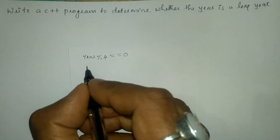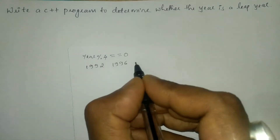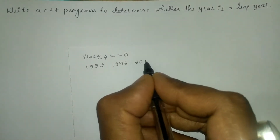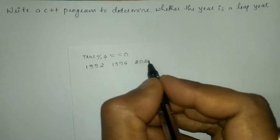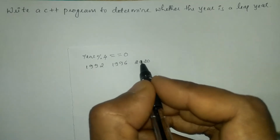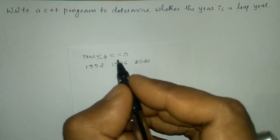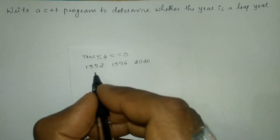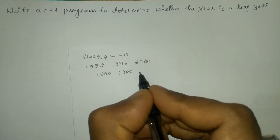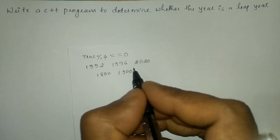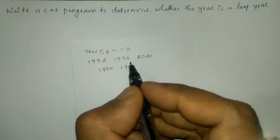For example, 1992, 1996, and even 2020 are some examples of leap years. There is an exception to this rule: some years, such as centennial years, are not leap years. For example, 1800 and 1900 are not leap years. But there are exceptions to these exceptions as well.